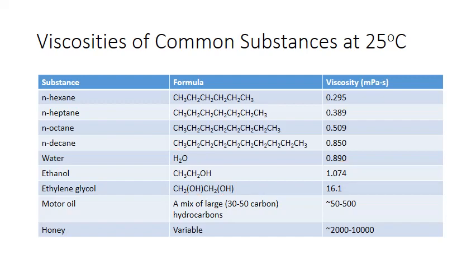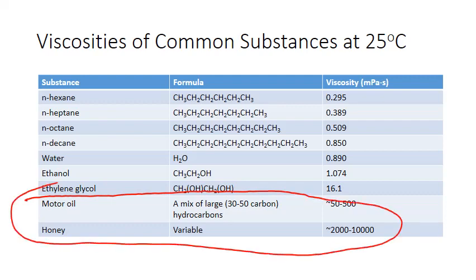At the bottom of this chart, we have motor oil and honey, which we already know have high viscosities. Motor oil is actually made up of hydrocarbons similar to the alkanes at the top of the list. The big difference is that these hydrocarbons are huge — 30 to 50 carbons in them. So the larger the molecule, the larger those forces, and as a result, the higher the viscosity.